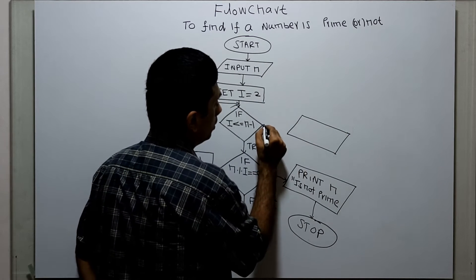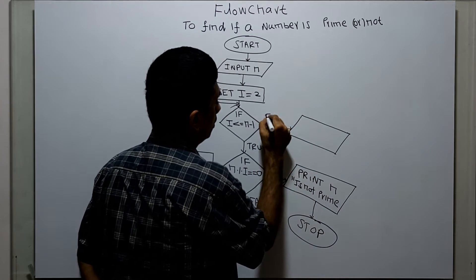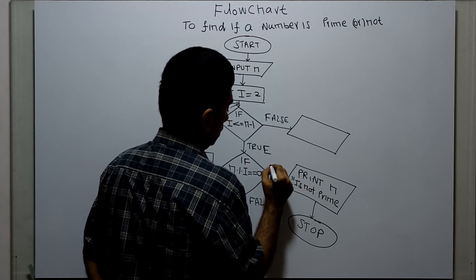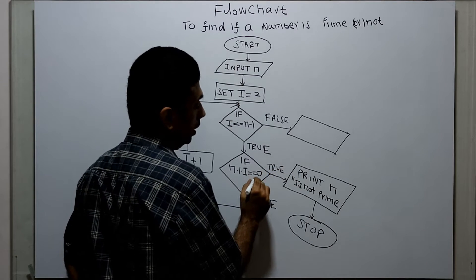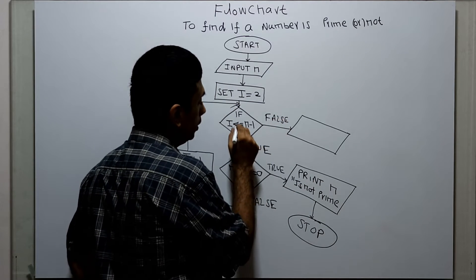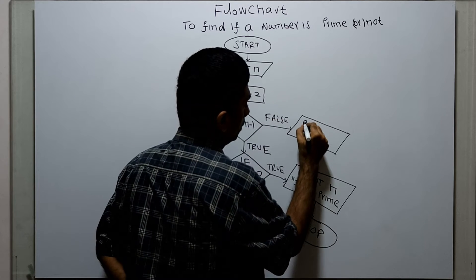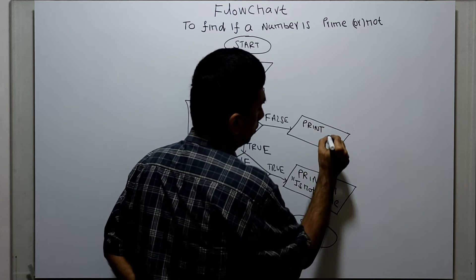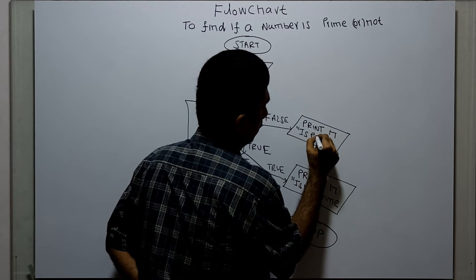When i less than or equal to n minus one is false, I am printing n is prime. If n modulo i equal to zero is true, I print n is not prime. If i less than or equal to n minus one is false, I print n is prime.